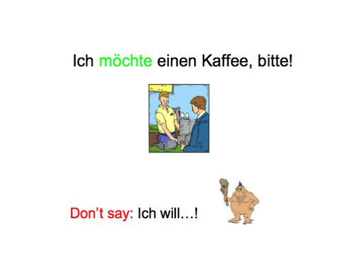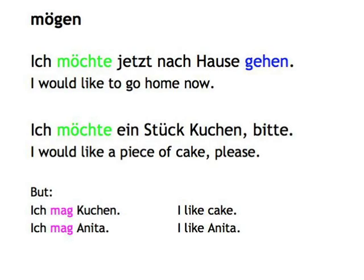Similarly, you will probably use the conditional form 'Ich möchte' (I would like to) of the verb mögen more often than the normal form 'Ich mag', which means 'I like somebody or something' and is therefore not a modal verb use. It's very likely you're already familiar with 'Ich möchte', as it's used every time you order something in a restaurant or ask for something in a shop — and remember not to use 'Ich will' in these situations. So: Ich möchte jetzt nach Hause gehen (I'd like to go home now), Ich möchte ein Stück Kuchen bitte (I would like a piece of cake please), but Ich mag Kuchen (I like cake), Ich mag Anita (I like Anita).